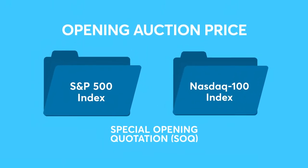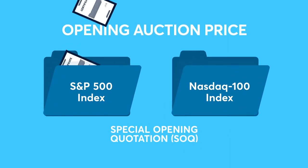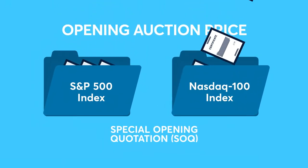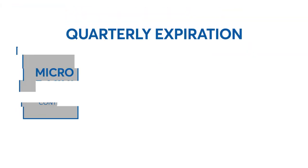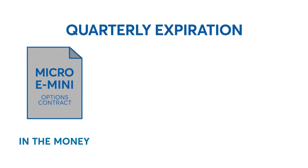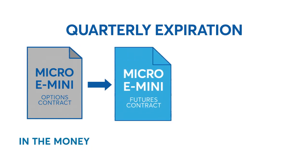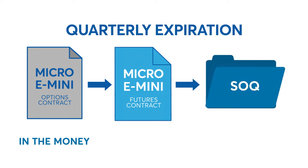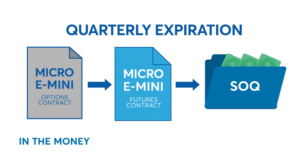This is calculated using the resultant opening auction price of the constituent stocks within each index and is referred to as the Special Opening Quotation, or SOQ. Upon expiration, in-the-money quarterly options will deliver the respective underlying futures contract, which immediately settles to the cash value of SOQ. A trader would no longer have exposure to the market because both the options and futures contracts expire on the same day.